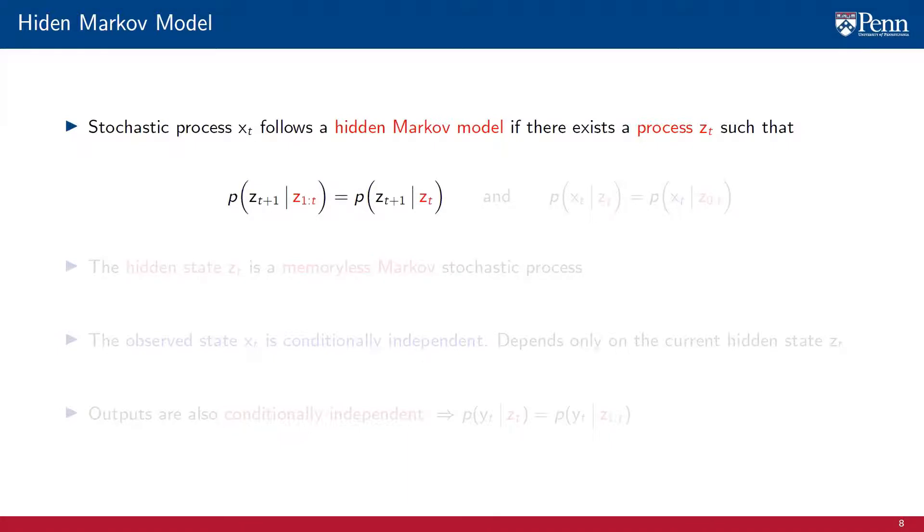Formally, the process z of t is one whose probability distribution at time t plus 1, given the entire trajectory of the process, is the same as its probability distribution when conditioning only on just the current value of the process. This just means that zt is a regular Markov process.